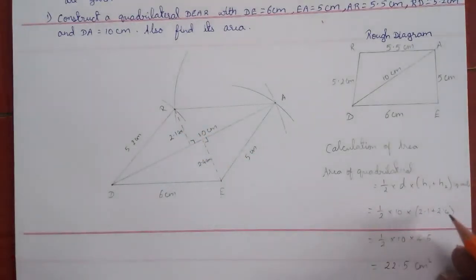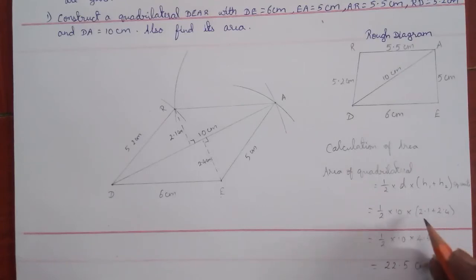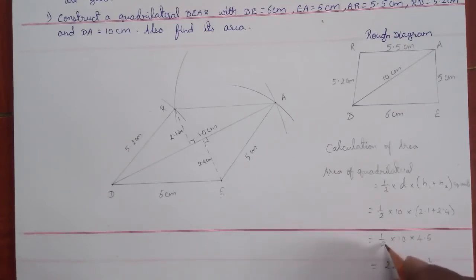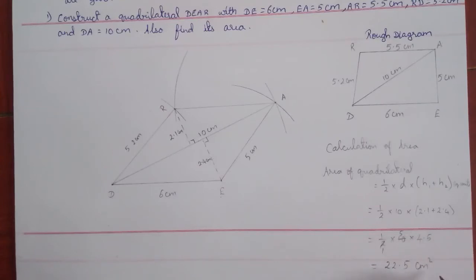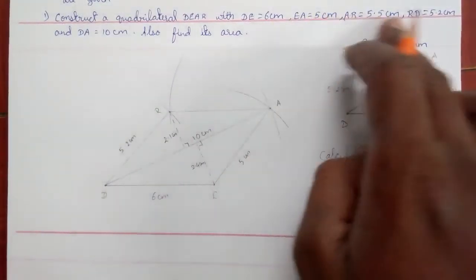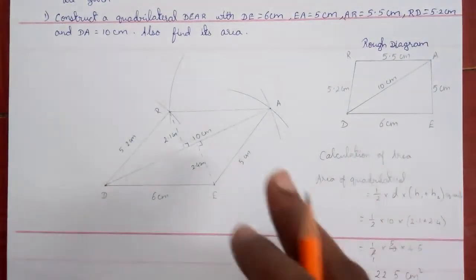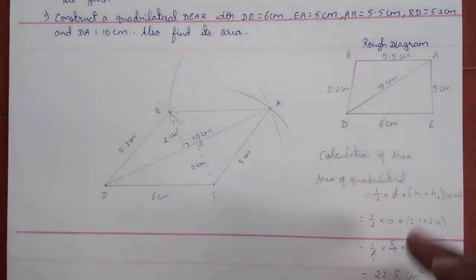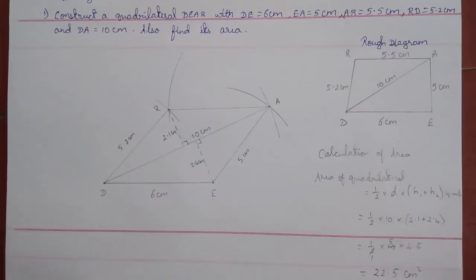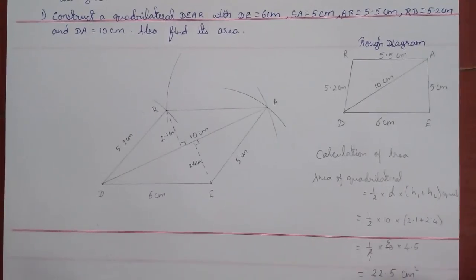Area equals half into 10 into 2.1 plus 2.4. Adding H1 and H2: 2.1 plus 2.4 equals 4.5. Cancelling 2 and 10 gives 5. Then 5 into 4.5 equals 22.5 centimeter square. Based on this, try to do the given sum by constructing the rough diagram, main diagram, and then calculating the area.